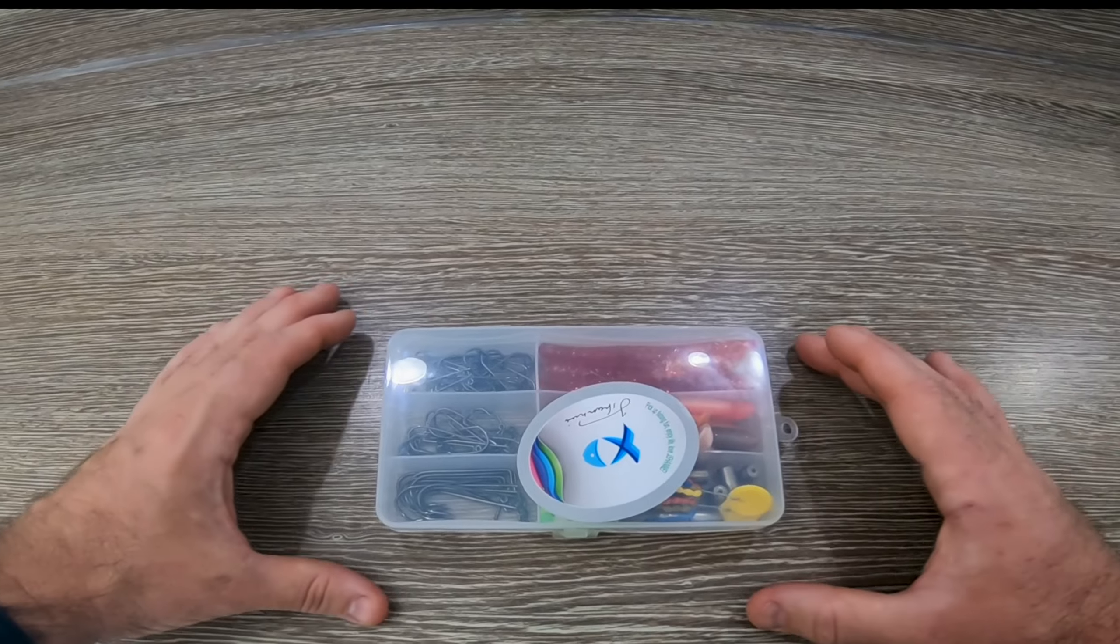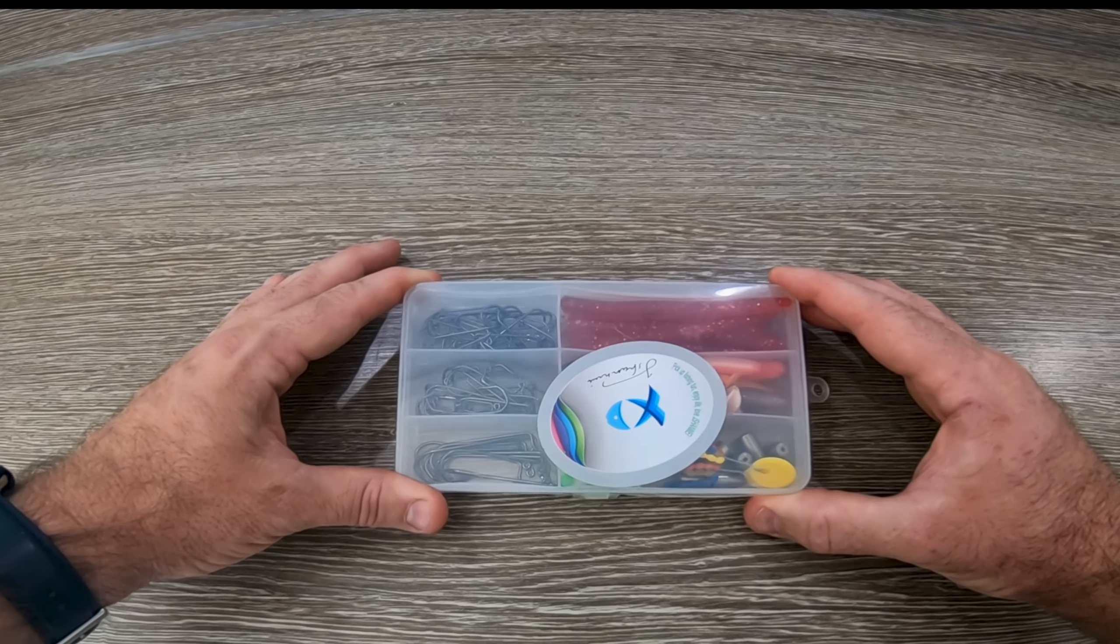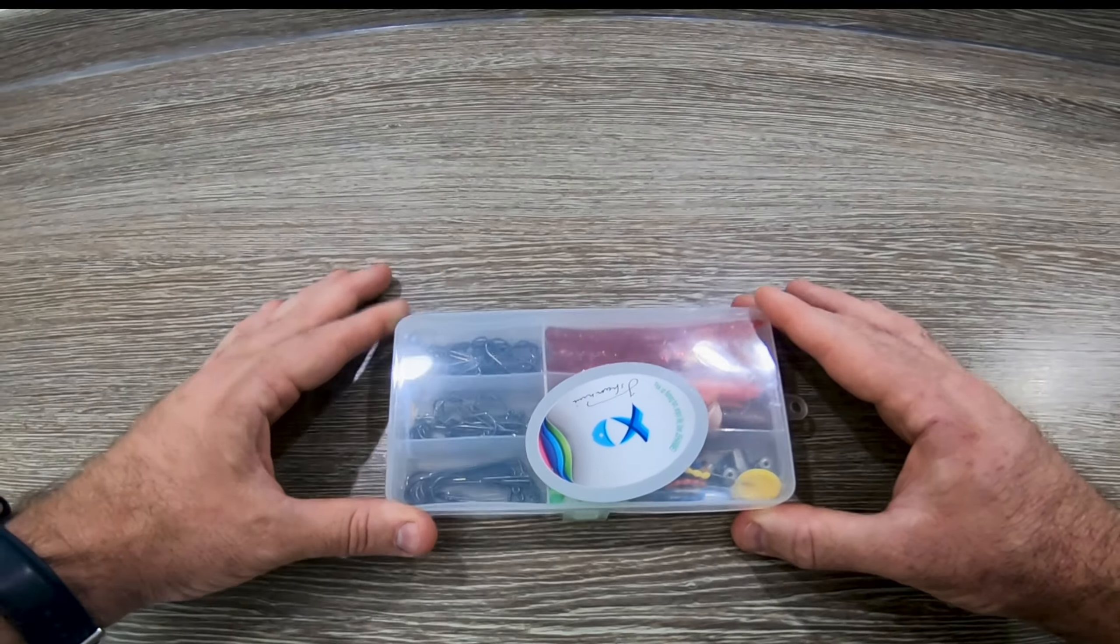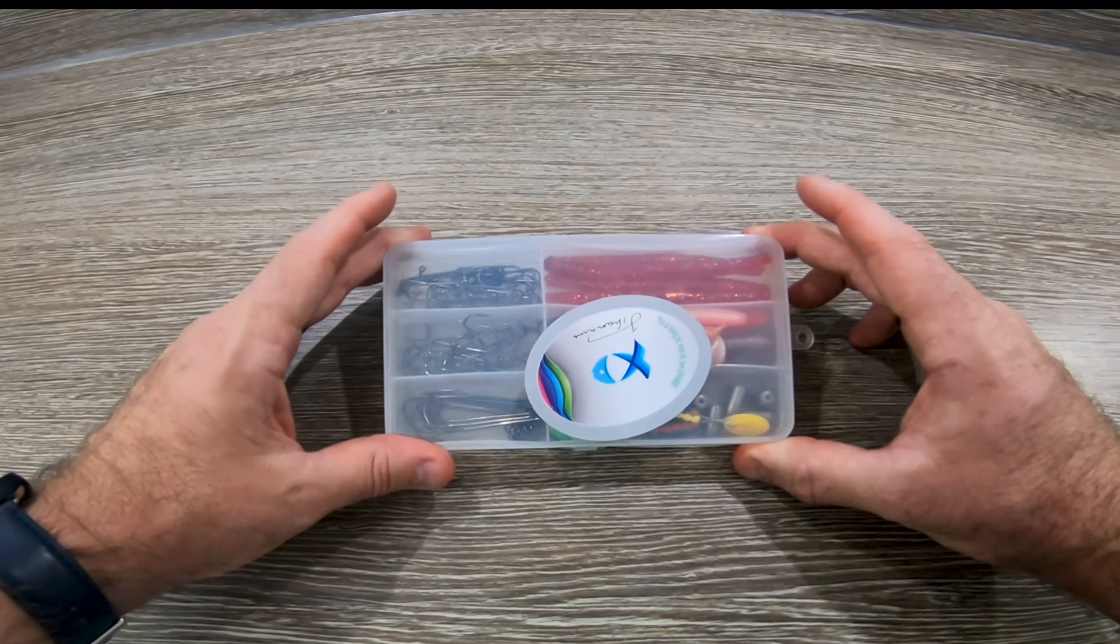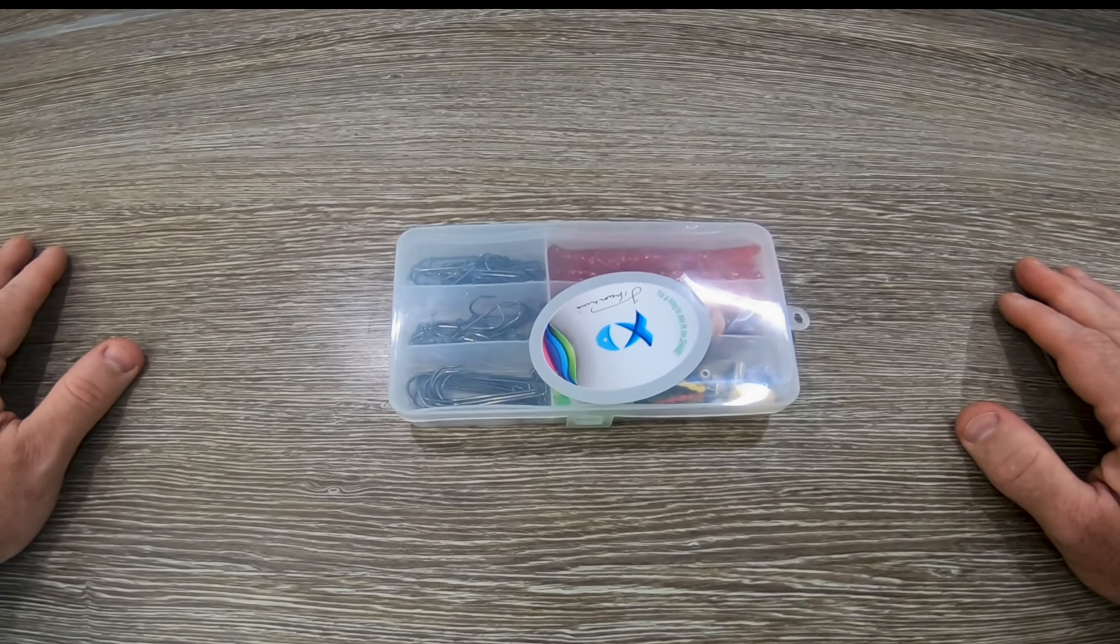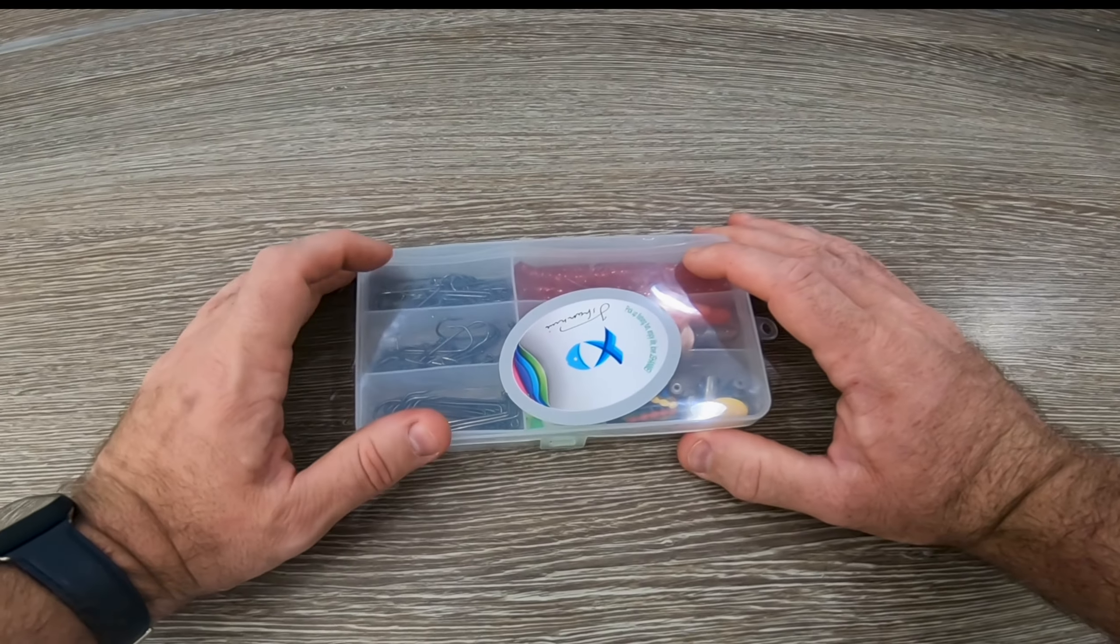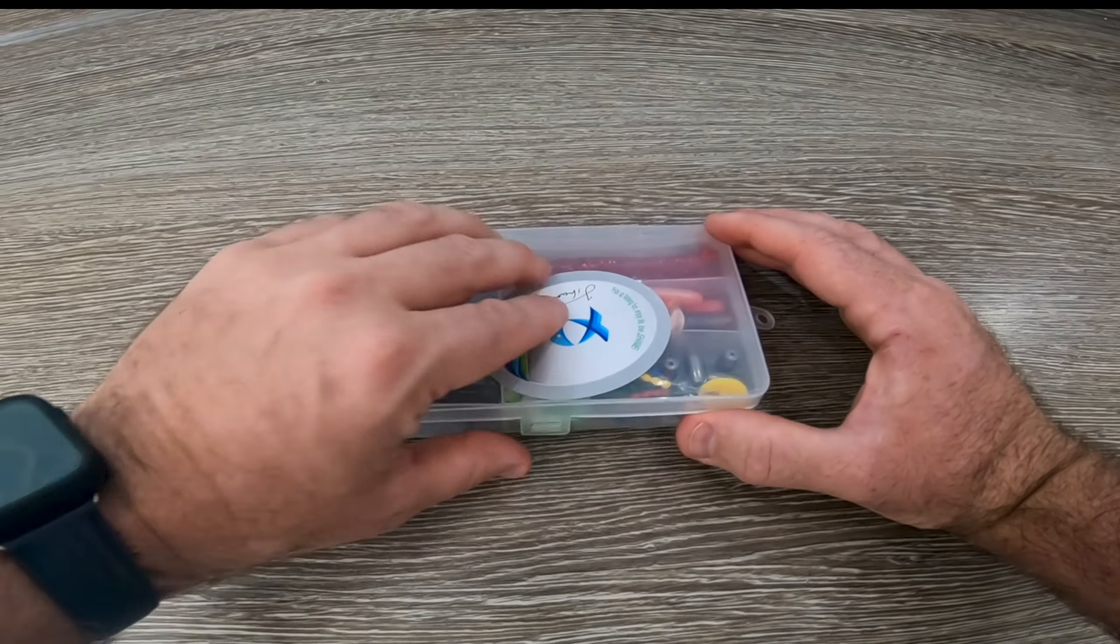Hello, so today we've got this little lure fishing tackle box and it is set up for Texas rigs. I haven't really done much lure fishing so I wanted to try a few different things. I got this on Amazon for £9.99 with free posting.